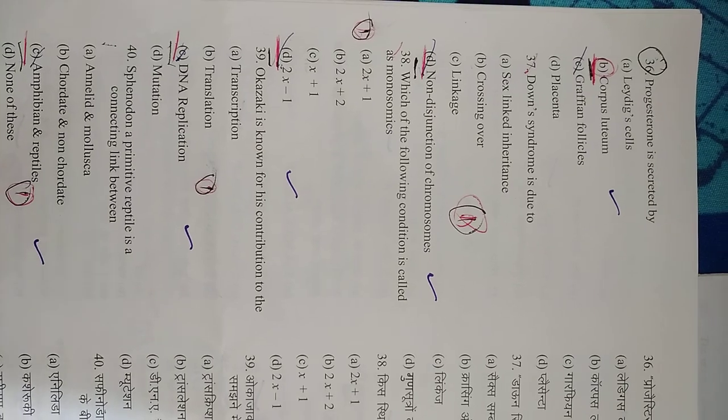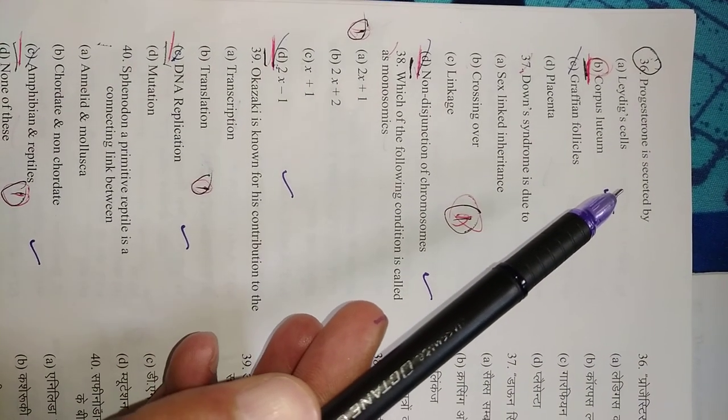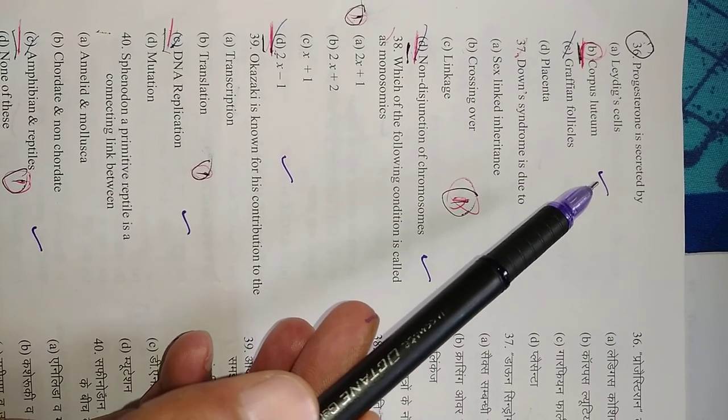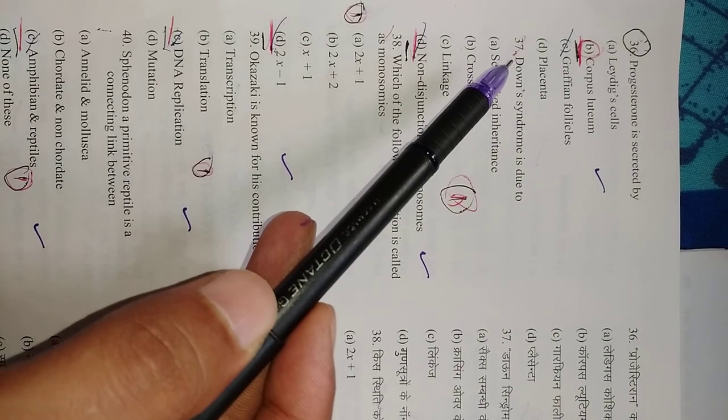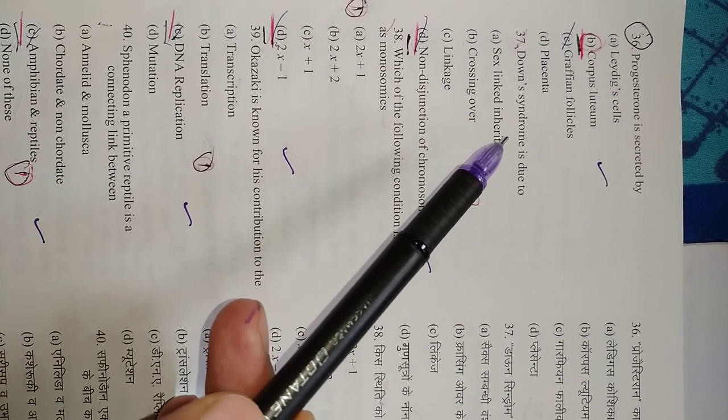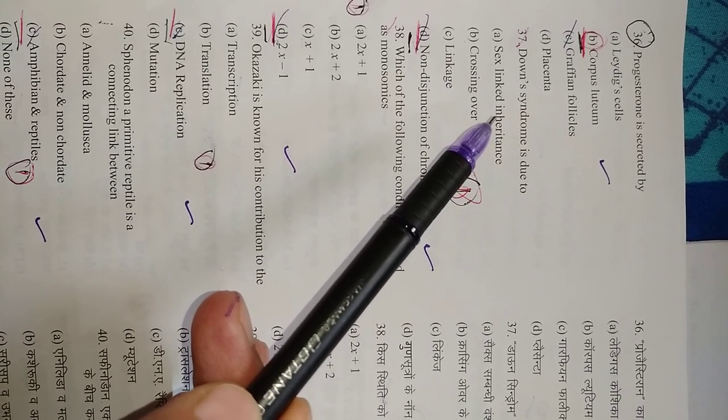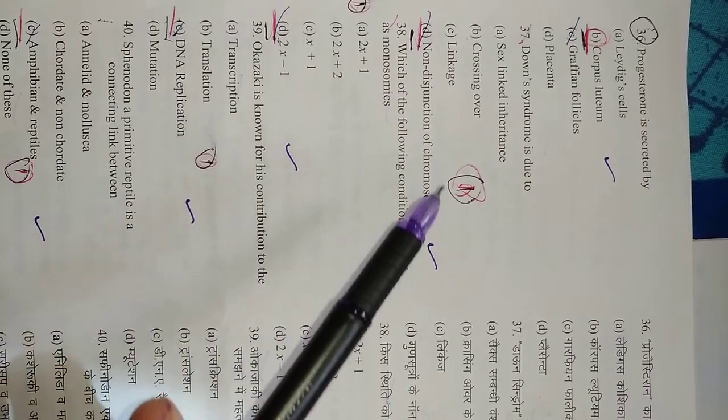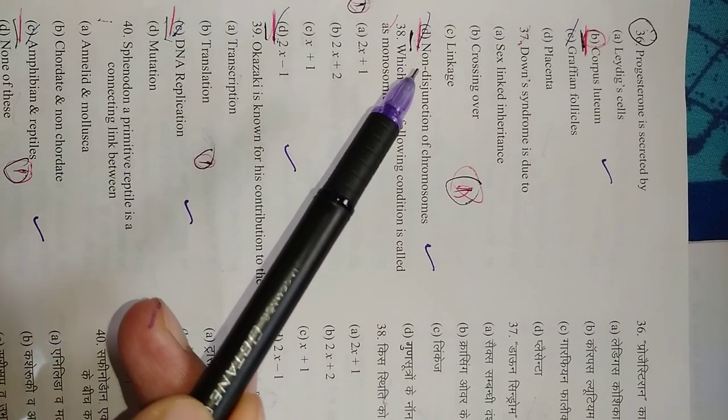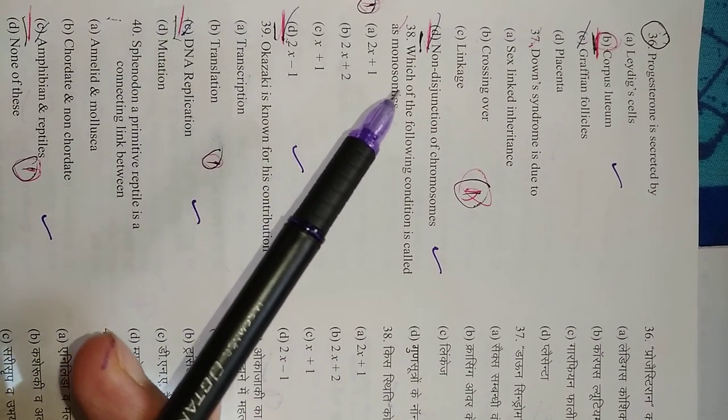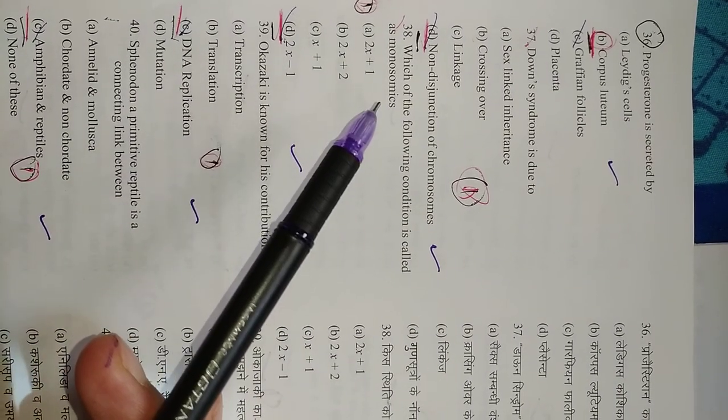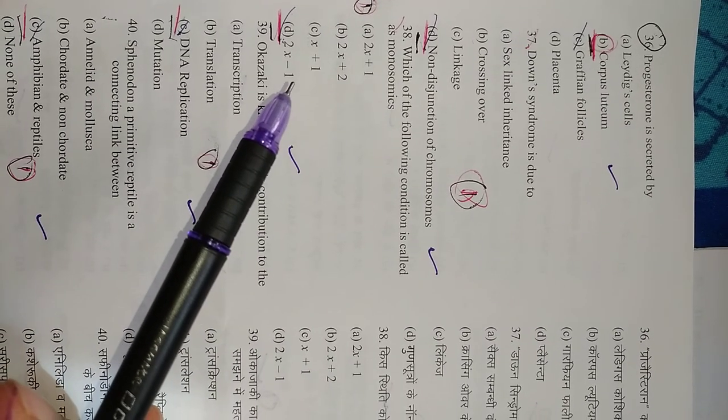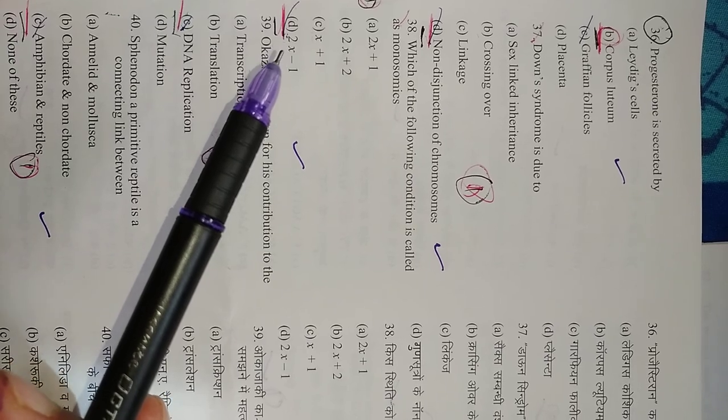Question number 36: Progesterone is secreted by corpus luteum. So right option is B. Question number 37: Down syndrome is due to—it is the trisomy of chromosome number 21. So right option is D, non-disjunction of chromosome. Question number 38: Which of the following condition is called monosomic? In monosomic conditions there is one chromosome less. So right option is D, 2n minus 1.